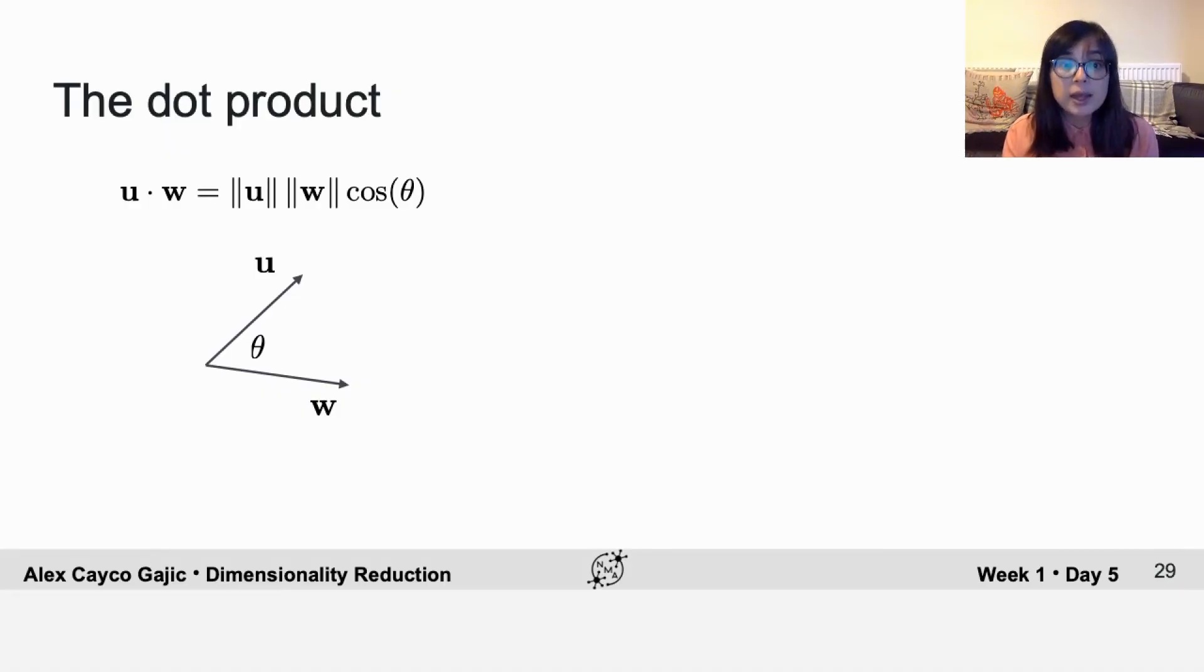So u dot w is defined as the magnitude of u times the magnitude of w times the cosine of the angle between them.